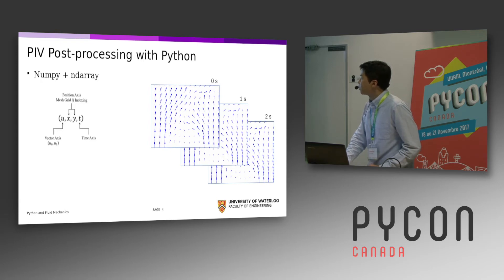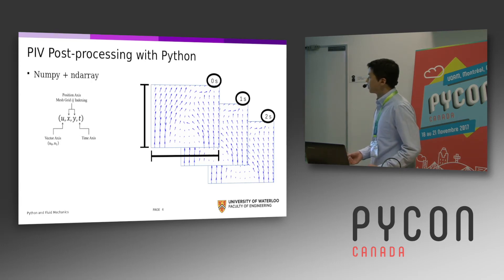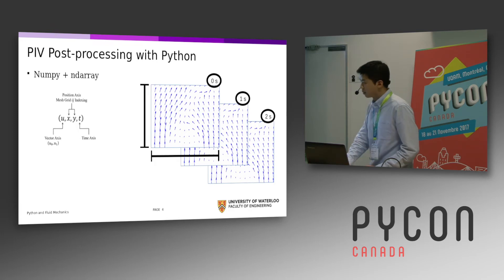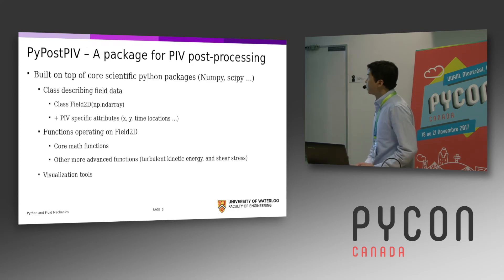But NumPy is missing just one thing. NumPy doesn't actually store the times at which the fields were captured or the actual spatial dimensions, and these things are really important for computing various mathematical quantities like spatial derivatives and time derivatives. So my colleagues and I have come up with a package for post-processing this kind of data.